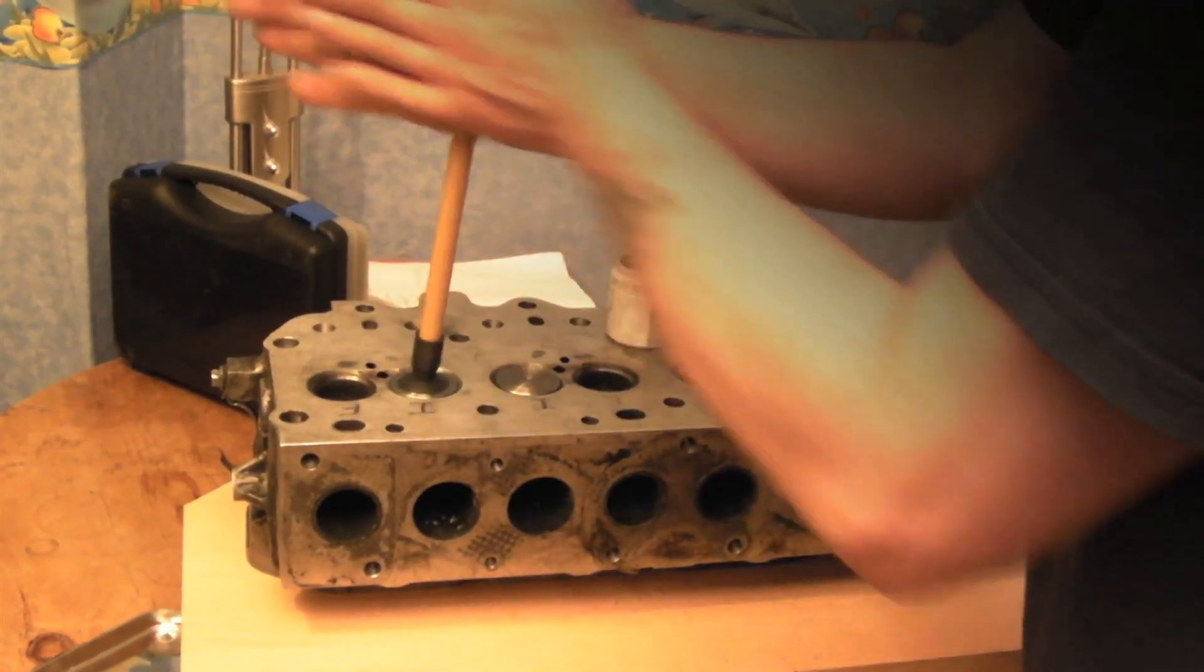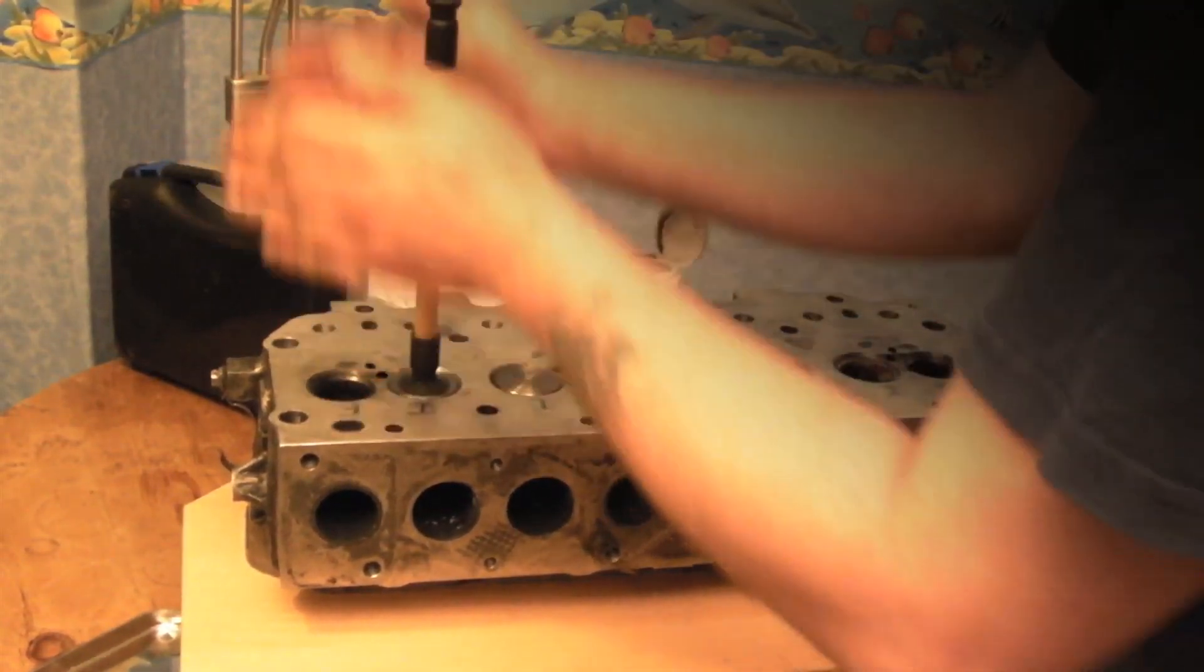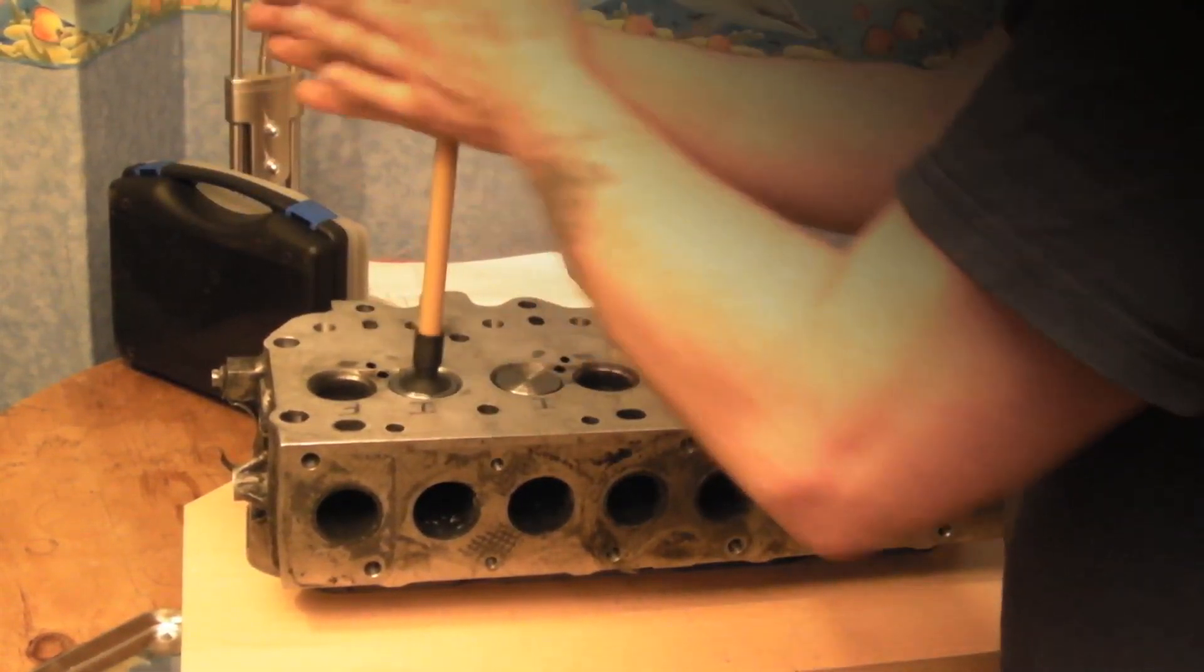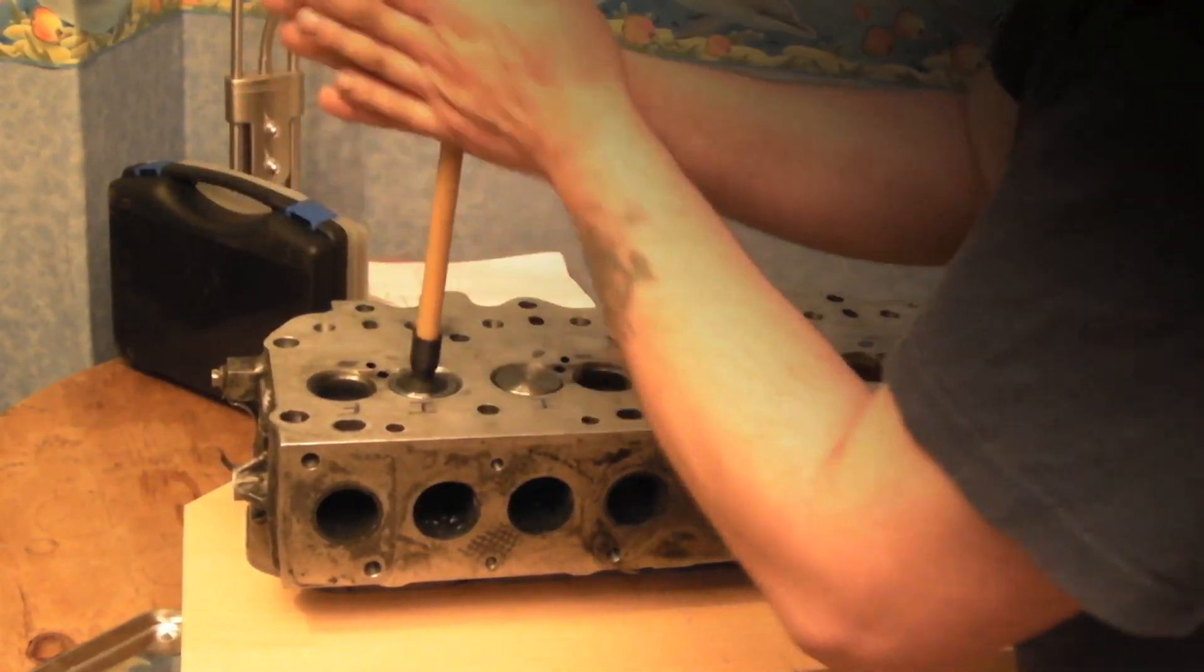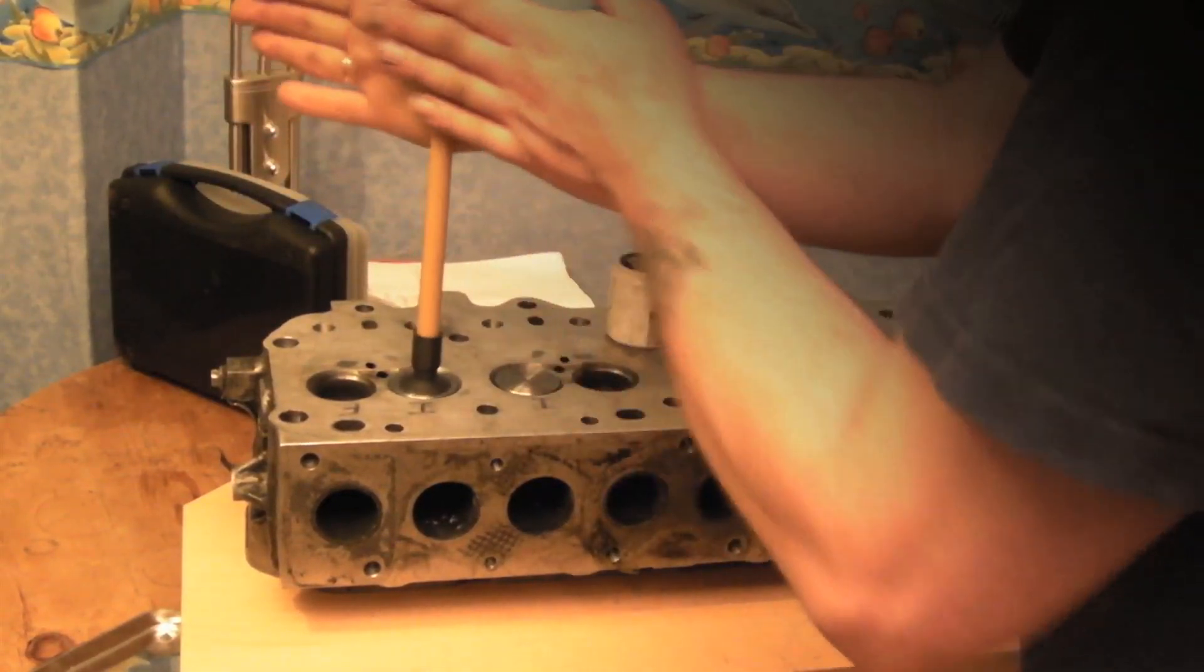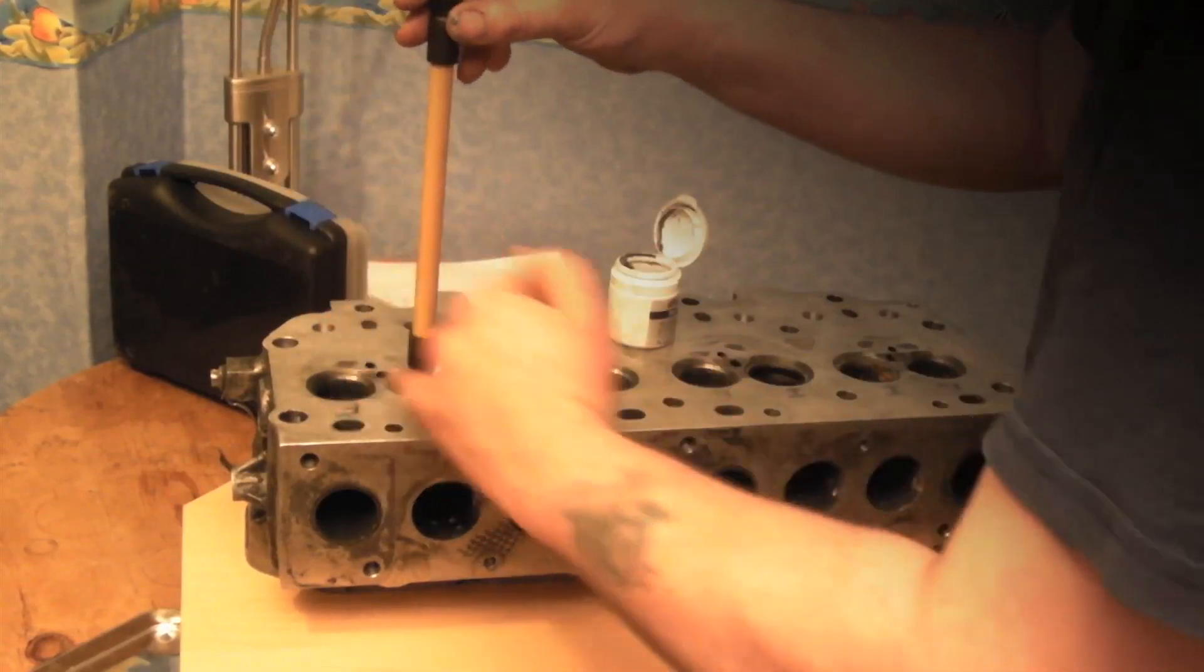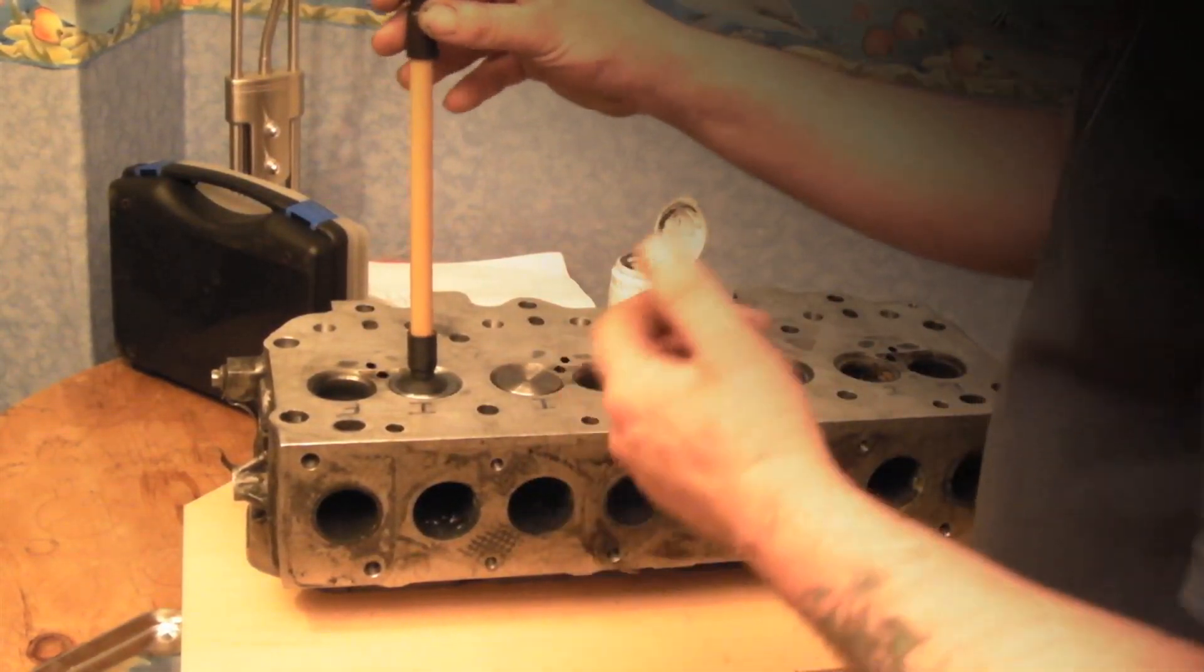Turn it 180 degrees and do it again. It'll take a little bit of time to do this. Of course, you have eight valves, so eight operations. I'll usually do all the ones first with coarse, and when I'm satisfied, do them with fine paste.